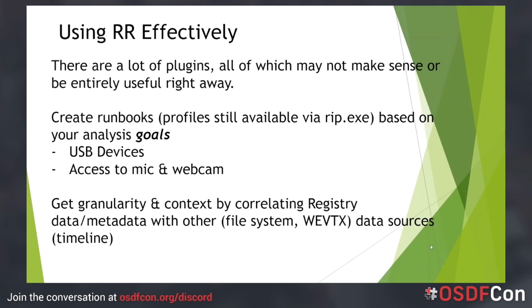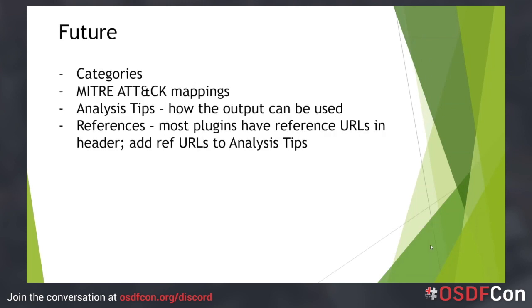Some functionality I've considered adding to a future version of RegRipper includes the use of categories, MITRE ATT&CK framework mappings, analysis tips, and references. Categories would be brief descriptive terms such as "program execution," "defense evasion," or "user activity." For example, "defense evasion" would apply when registry settings are used to disable Windows Defender as a means of impairing defenses. The use of categories can help structure the extraction approach by aligning it with the goals of the investigation — for instance, if you're looking for persistence mechanisms, user activity or system configuration data may not be of interest.